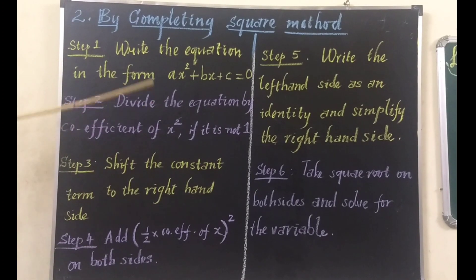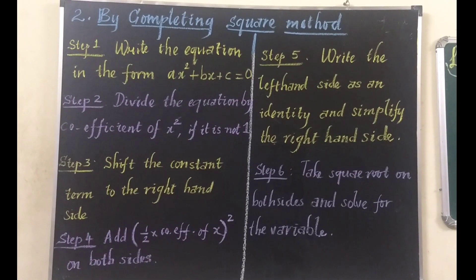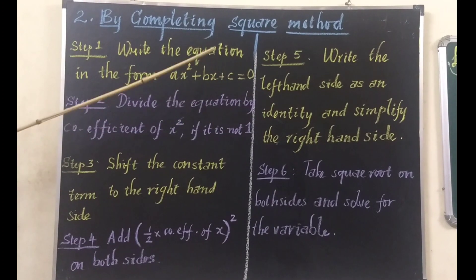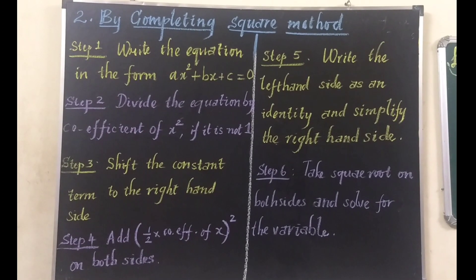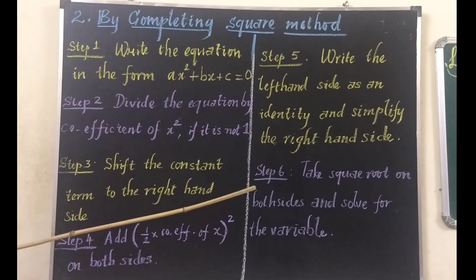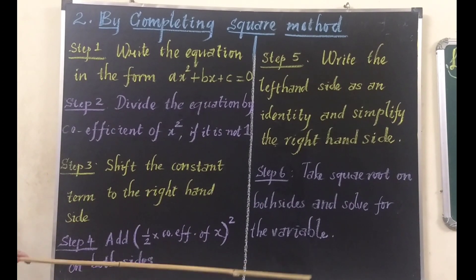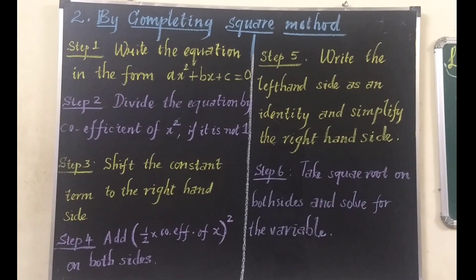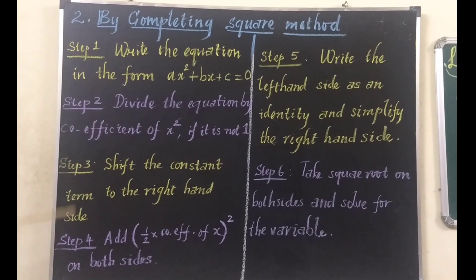Step 5: after making these changes, the left hand side surely becomes an identity — either (a plus b) whole squared or (a minus b) whole squared. After doing steps 2, 3, and 4, in the fifth step the left hand side becomes an identity. Make it as an identity and simplify the right hand side where only numbers remain. Step 6: take the square root on both sides and solve for the variable. On the right hand side there is a number value — take the square root on both sides and find the value of the variable.